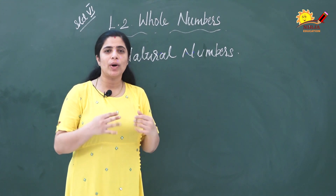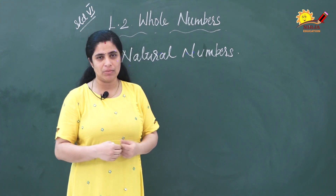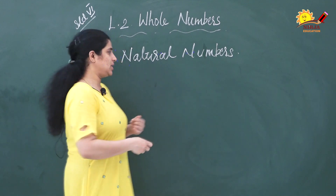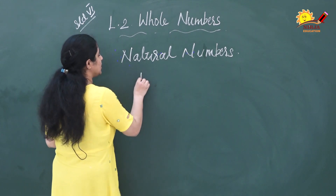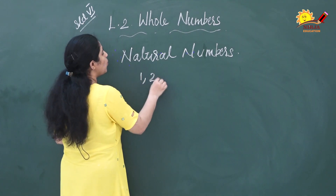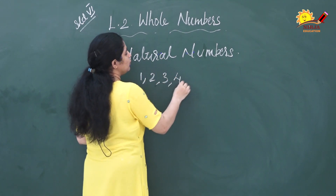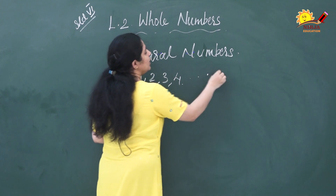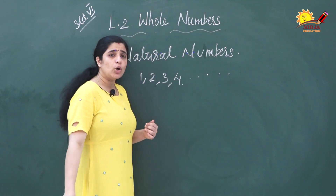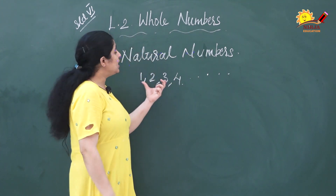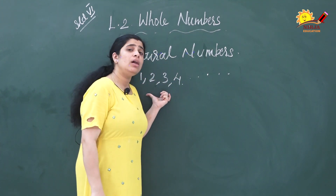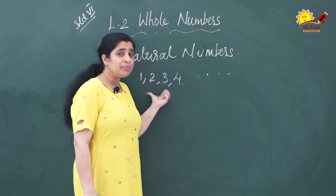Now you come to know what are natural numbers? The numbers starting from 1, 2, 3, 4, etc. are known as natural numbers.